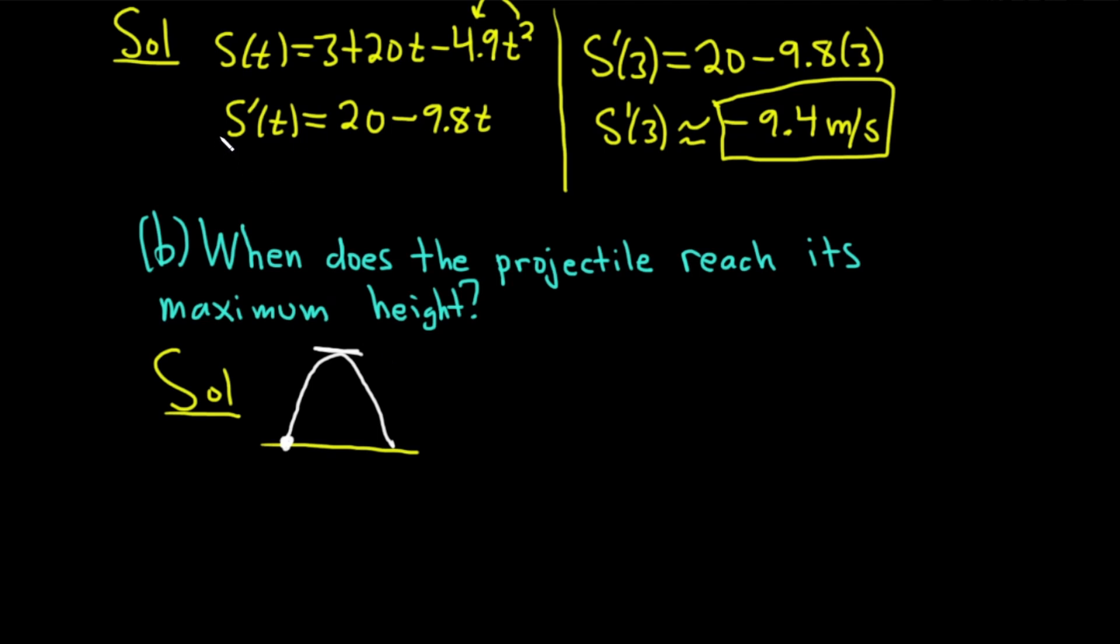So to find out when that happens, we'll take our velocity function, which is s'(t) = 20 - 9.8t. And we're going to set it equal to zero.